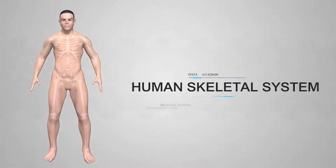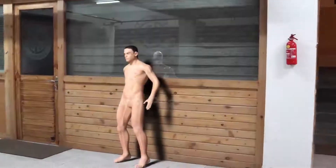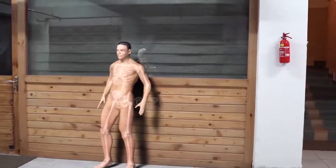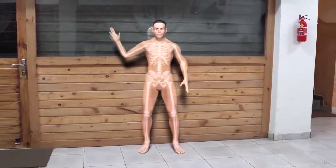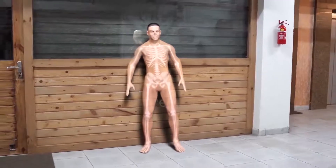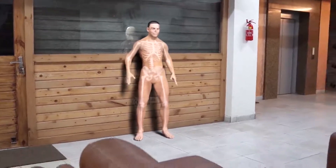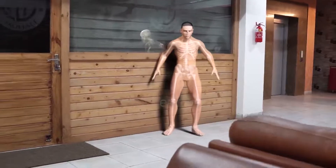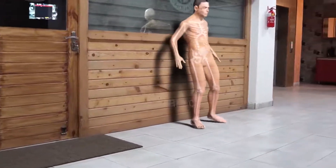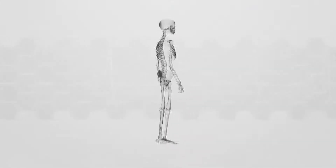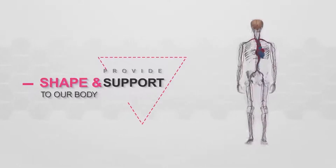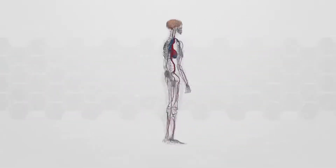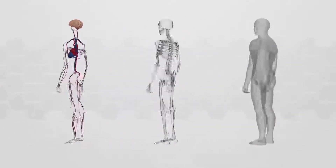Human Skeleton System. If we touch any part of our body and press it hard enough, then we will be able to feel certain hard elements. These are called bones. Bones are essentially tissues, but extremely hard tissue. The main function of the human skeleton system is to provide shape and support to our body. Without the skeleton system, we would just fall like a heap of cards.